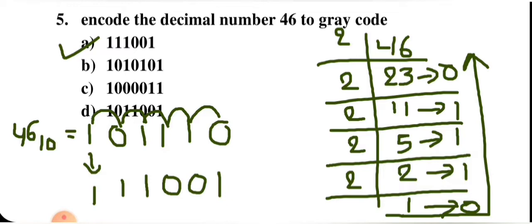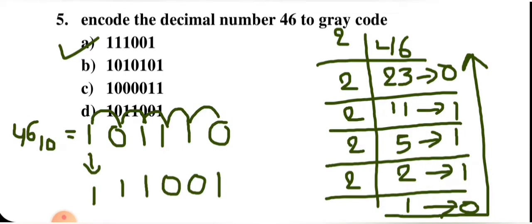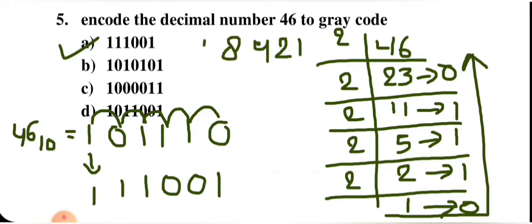Alternatively, you can use the direct method: identify powers of 2 — 1, 2, 4, 8, 16, 32. For 46, you need 32 plus 8 plus 4 plus 2, which gives 46 with remainder 0, confirming the binary representation 101110.